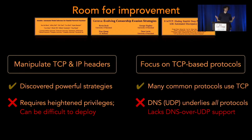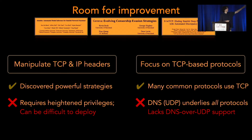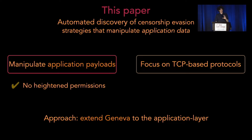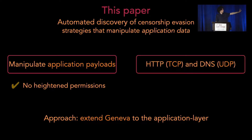Number two: for DNS over UDP, we don't have techniques to automatically find evasion strategies in this space because it runs on UDP. So if we bring this existing work to the application layer, we won't need heightened permissions to execute strategies. Applications can manipulate their own application data stream. And focusing on the application layer means we can automatically find DNS strategies.